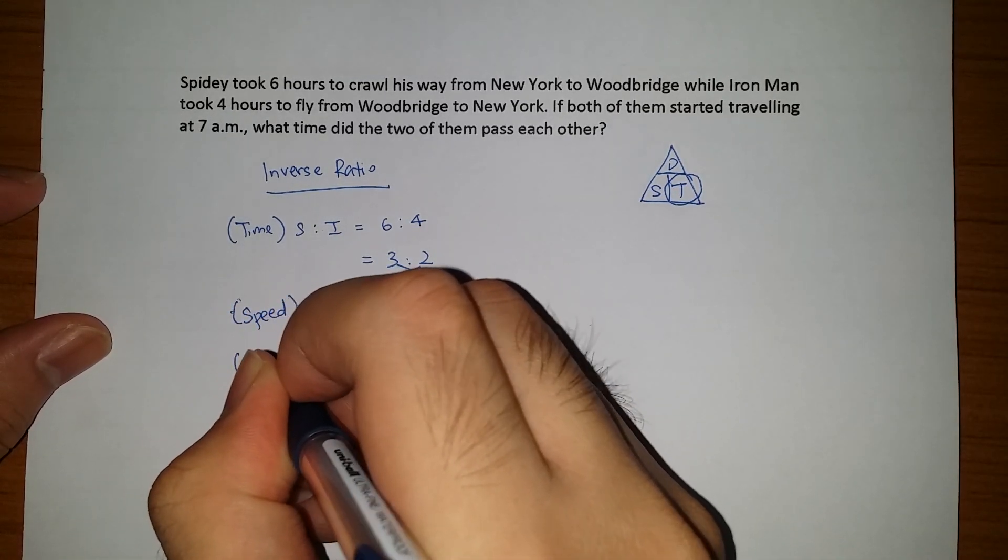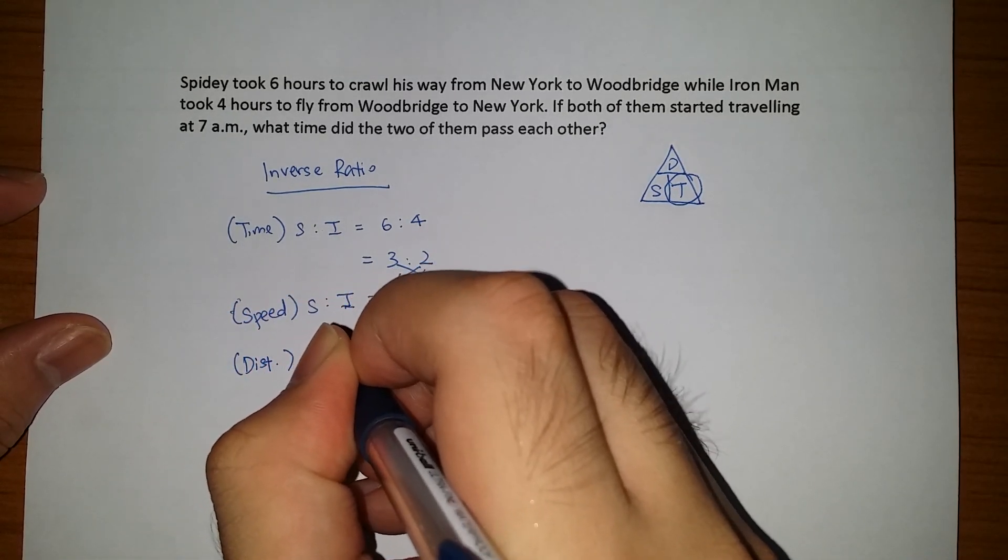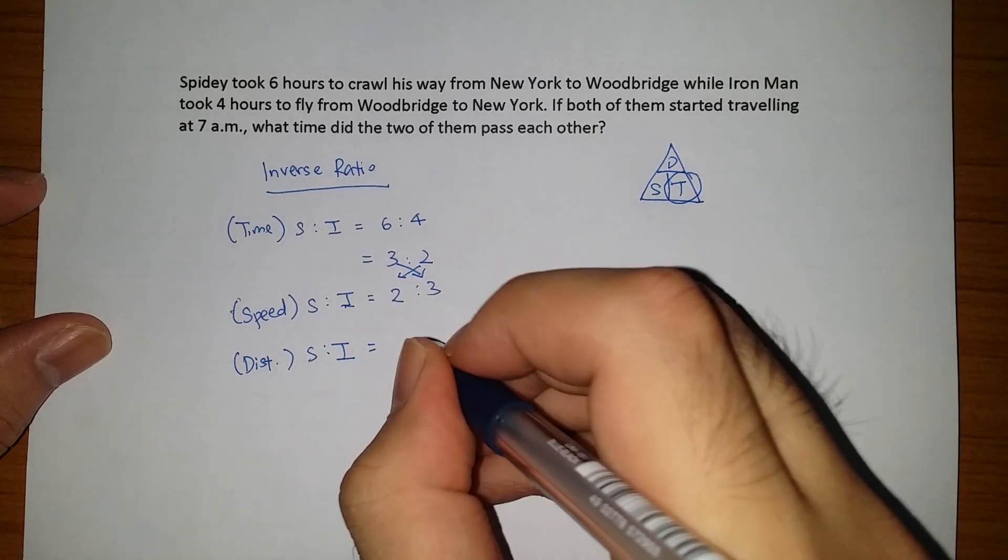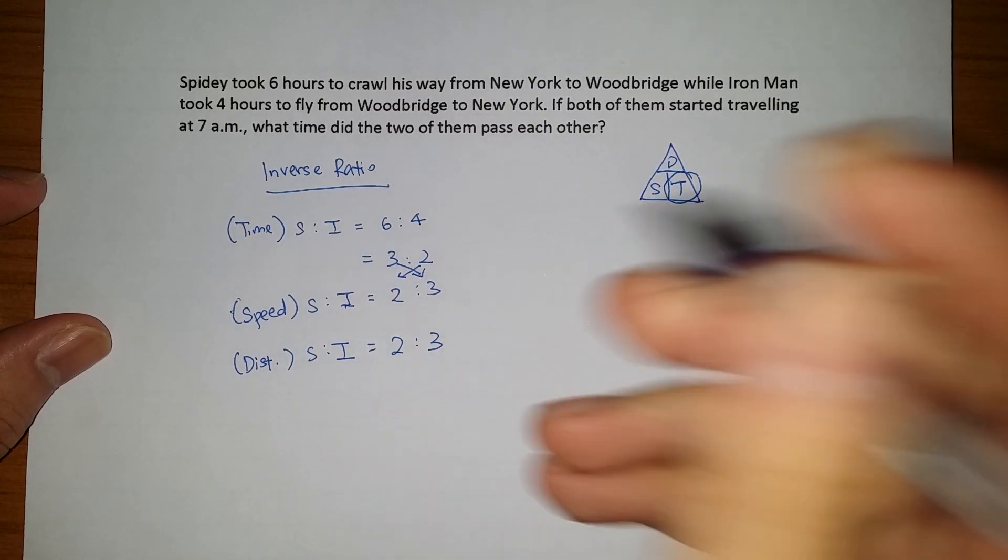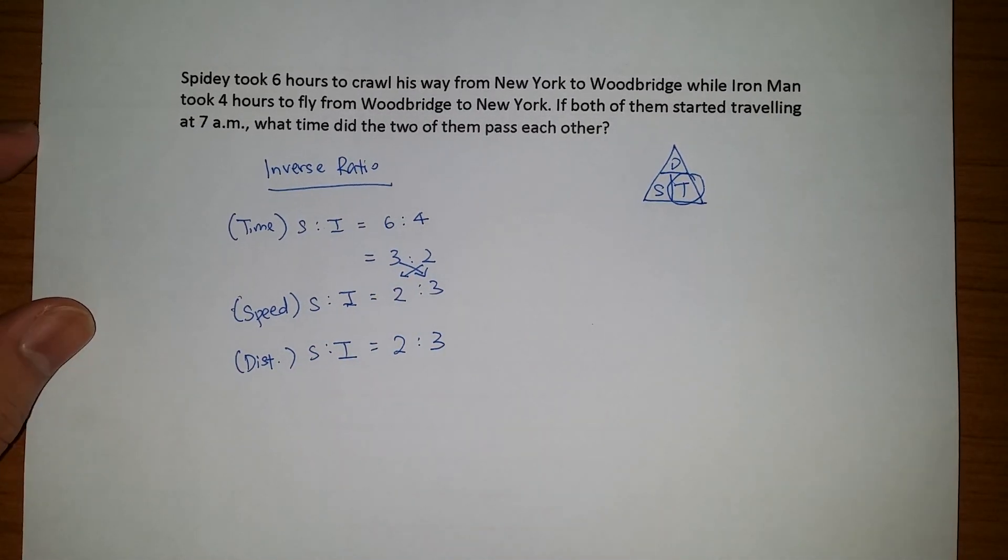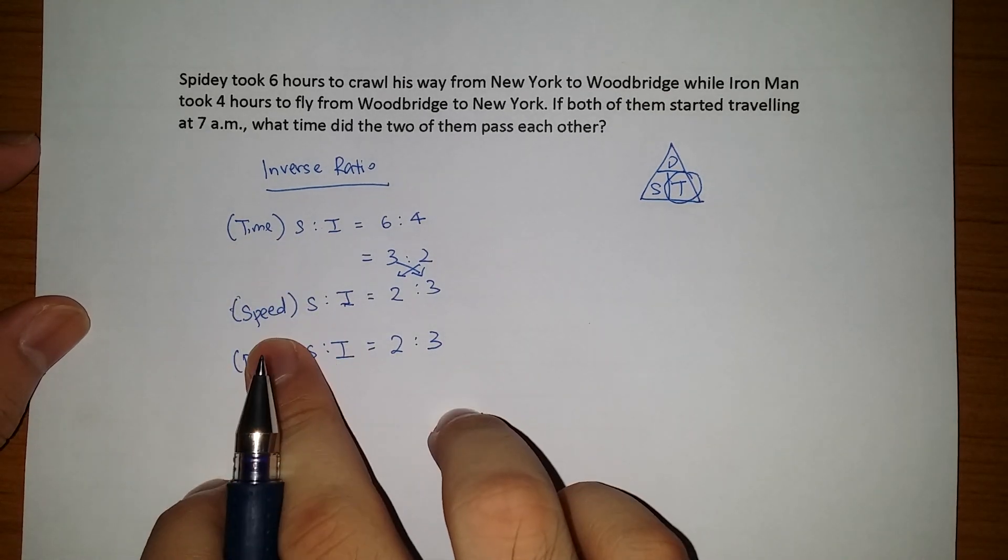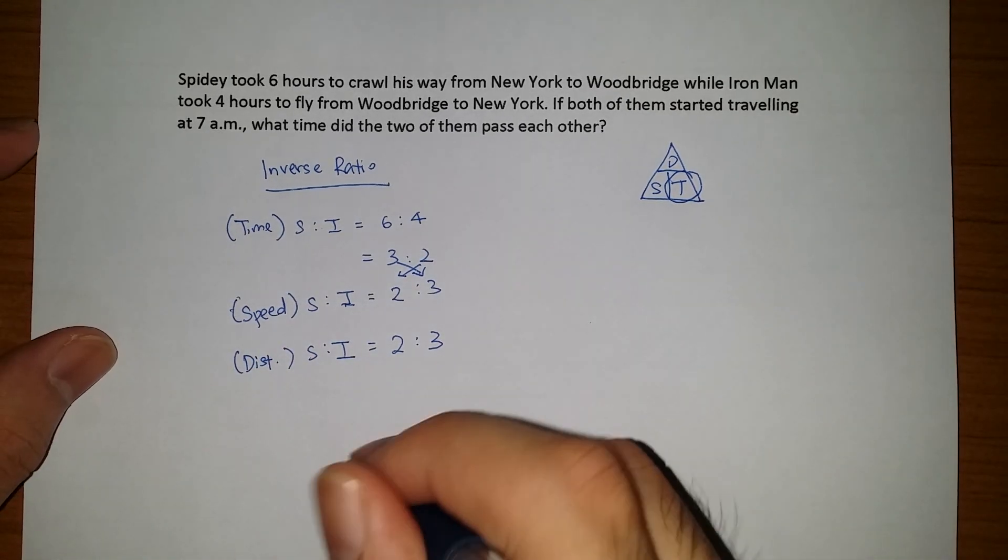Next, from here I know that in terms of the distance when they meet up, I know that Spidey traveled 2 units while Iron Man traveled 3 units. So this is the time ratio, speed ratio, and the distance covered by both of them.